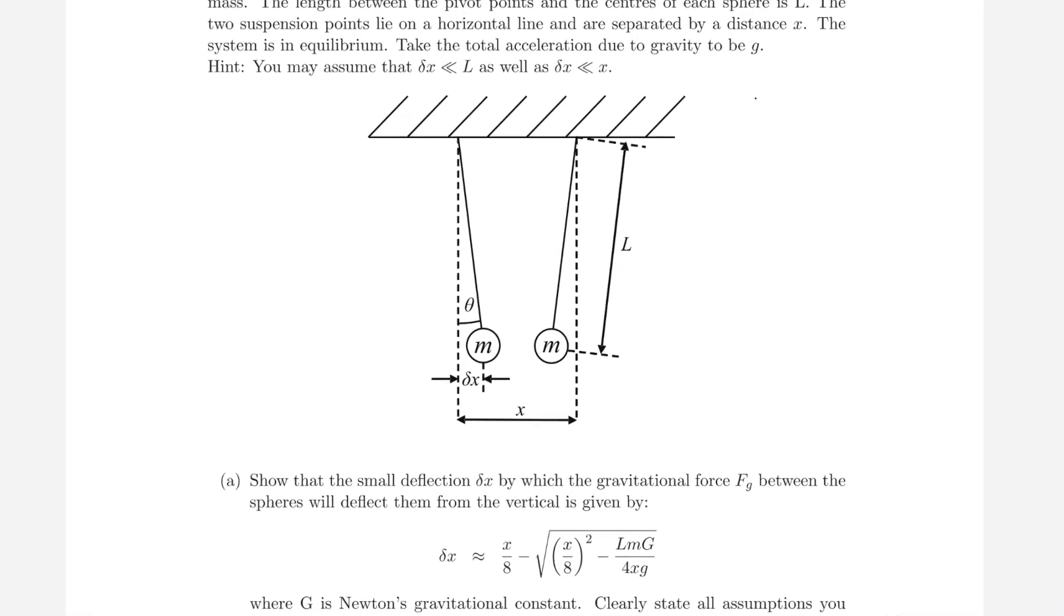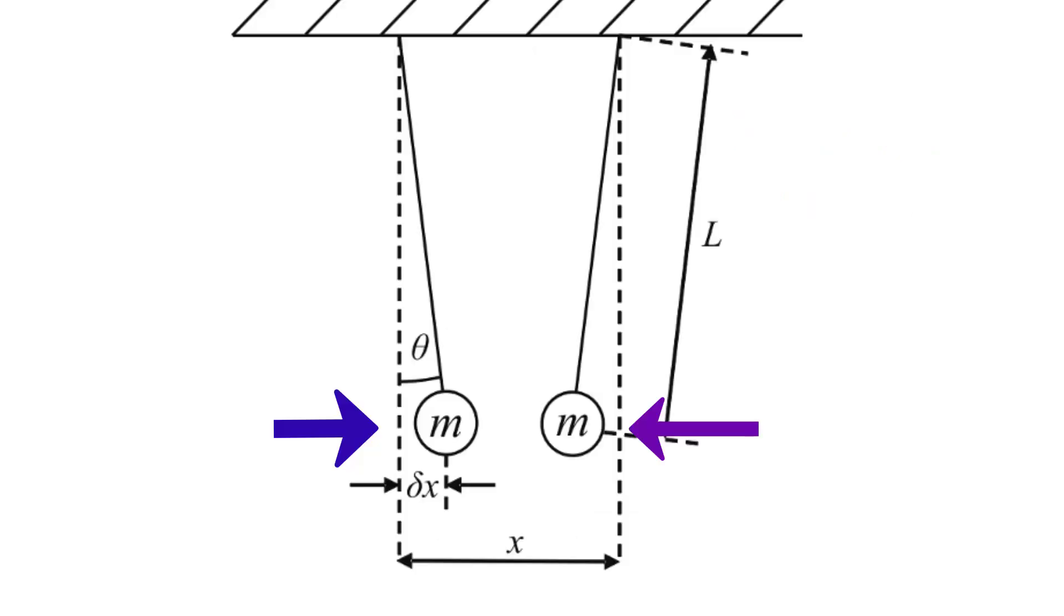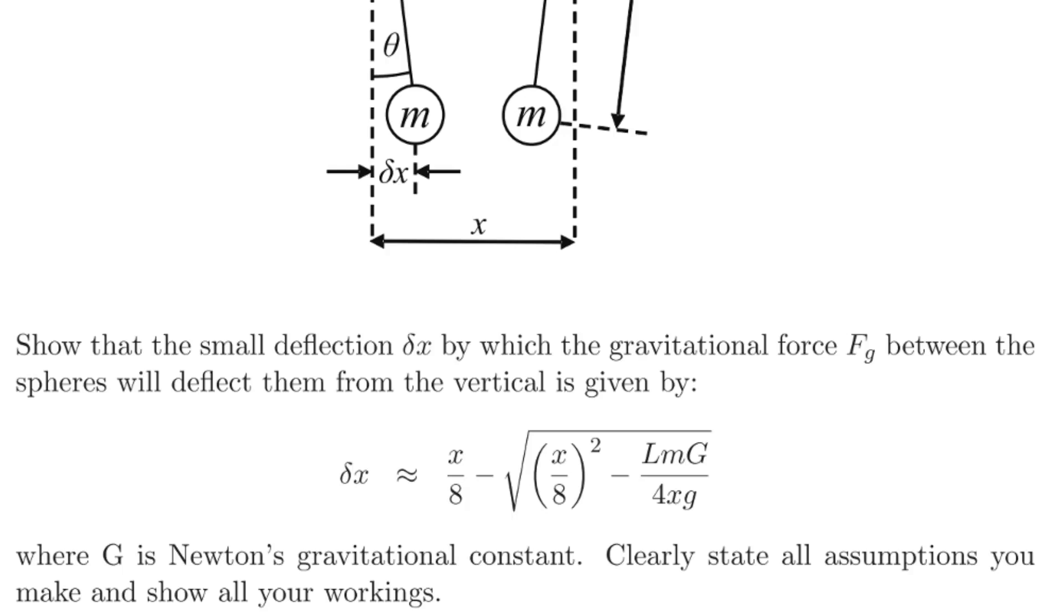Let's solve a hard physics problem. In this question from the 2018 Oxford Physics Admission Test, we have a couple of masses that are connected on strings of length L and they're being deflected from the balance point by the gravitational force. What we need to prove is that the small deflection delta x is approximately equal to this expression.